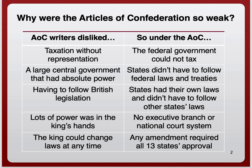Another weakness: under the Articles of Confederation, if the states wished to amend or change anything in the document, all 13 states had to agree to that change. We've already established that these states operated like independent countries. Getting 13 states to agree on anything is very difficult, so it made changing the Articles nearly impossible, making it a highly inefficient weakness.